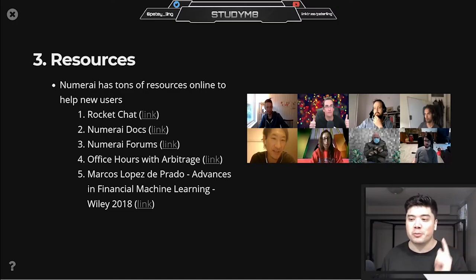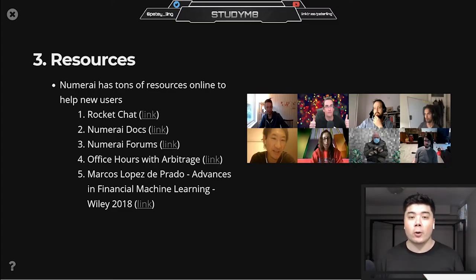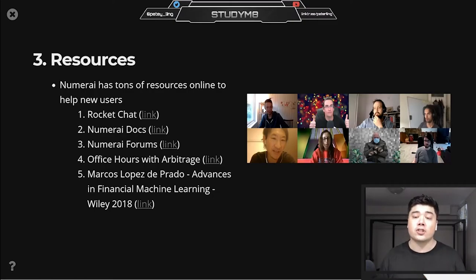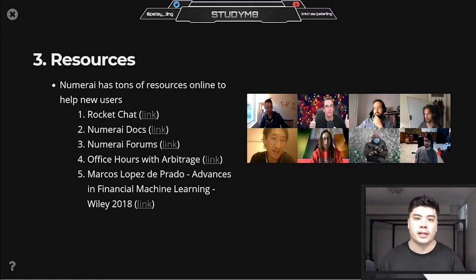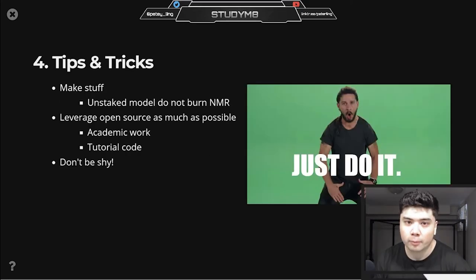Number five — last but not least — is Marcos Lopez de Prado's 'Advances in Financial Machine Learning.' This is a godsend of a textbook because it touches on a lot of topics you're going to need when joining the tournament and also comes with Python code snippets. When I first joined it was so essential just to have some backbone or skeleton code to base my initial solution off of. He was also a keynote speaker at a previous Numerai convention — definitely pick up this textbook, I would 100% recommend it.